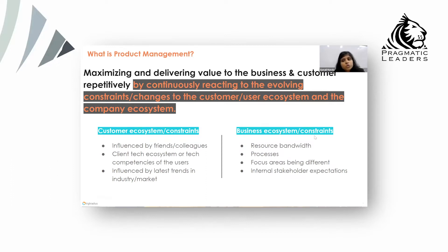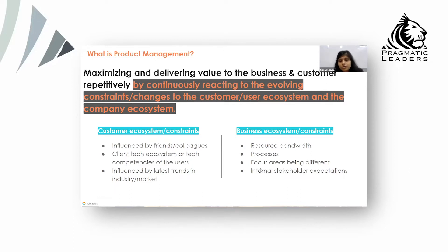The business ecosystem also has a lot of constraints. You might want to build an amazing product, but you might not have the right resource bandwidth. There might be process constraints, security constraints, compliance constraints. The focus areas of the organization might be very different from what you're thinking, because typically every organization will have one global charter every year or every six months. And there are internal stakeholders who might be using your product in some way, and their expectations might also be very different.